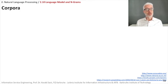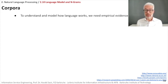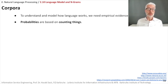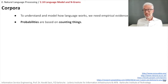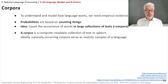We will do this simply by empirical evidence using so-called corpora. To understand and model how language really works, we need empirical evidence of language. If we have a huge set of examples, probabilities can be modeled by simply counting things — just as you model probability for a dice by counting how many times each value occurs.